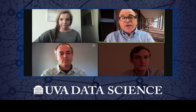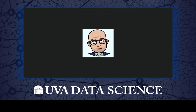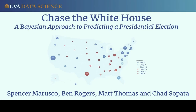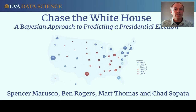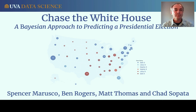Moving on to a different but equally relevant topic: U.S. presidential election forecasting, presented by Ben Rogers, Spencer Marusco, Chad Sapota, and Matt Thomas. Given the recent presidential election, this team saw an opportune moment to examine existing forecast models and develop their own novel model — the Chase the White House model — a Bayesian approach to predicting a presidential election.